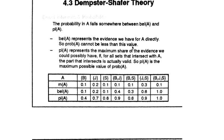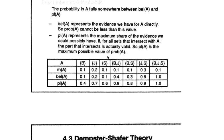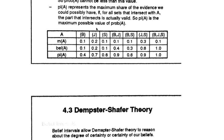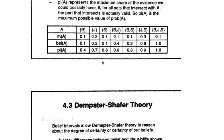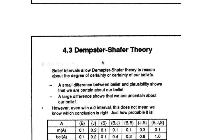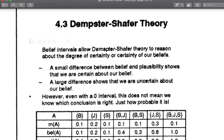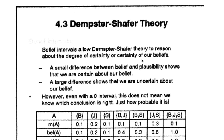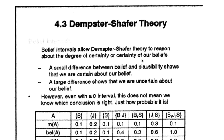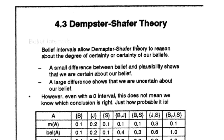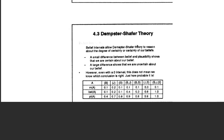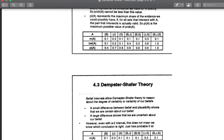The probability of A cannot be less than the belief value, as explained. This degree of certainty framework is majorly very well used in expert systems. That was it — thank you.